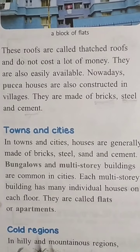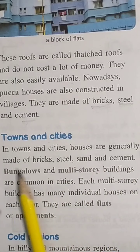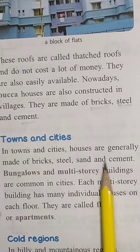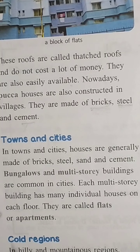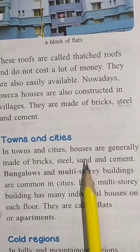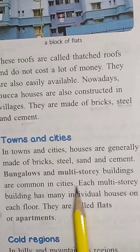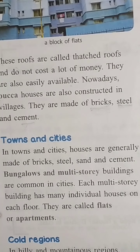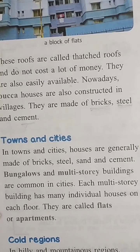Now, next point — towns and cities. In towns and cities, houses are generally made of bricks, steel, sand, and cement. Shehron mein kaisa ghar hote hai — bade pucca house hote hai, jo bricks, steel, sand, and cement se bante hain. Bungalows and multi-story buildings are common in cities. Jaise Delhi mein dekhlo, kitne saare multi-story buildings dekhne ko milte hain — kya aapne kabhi gaon mein aise multi-story buildings dekhe hain?